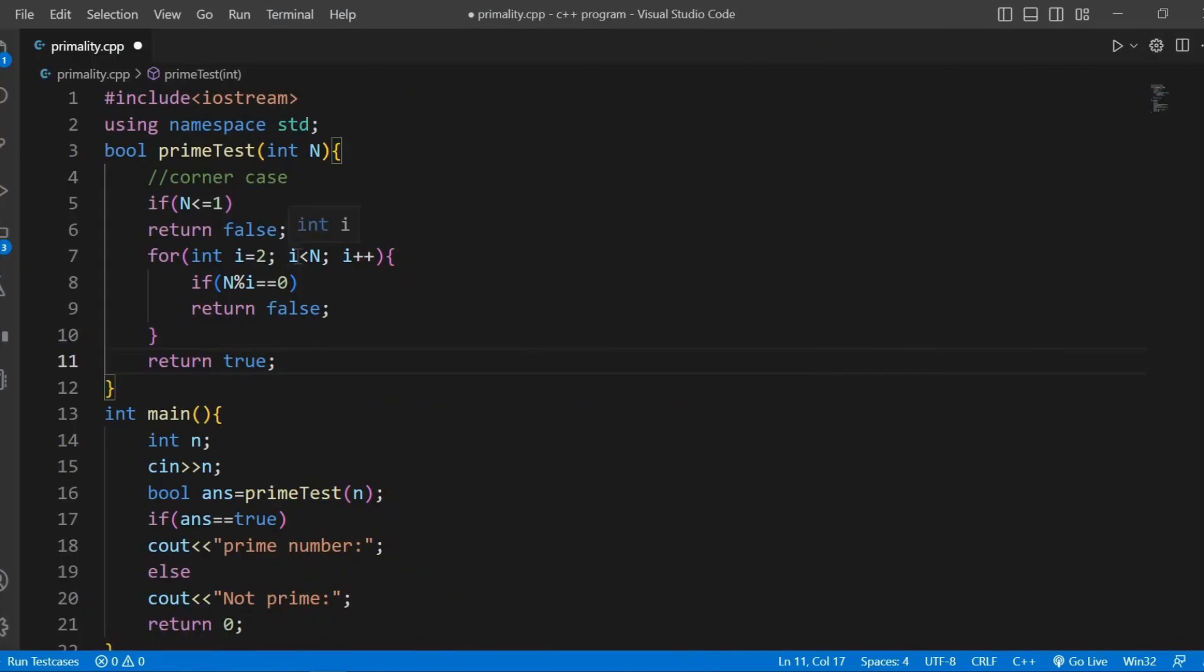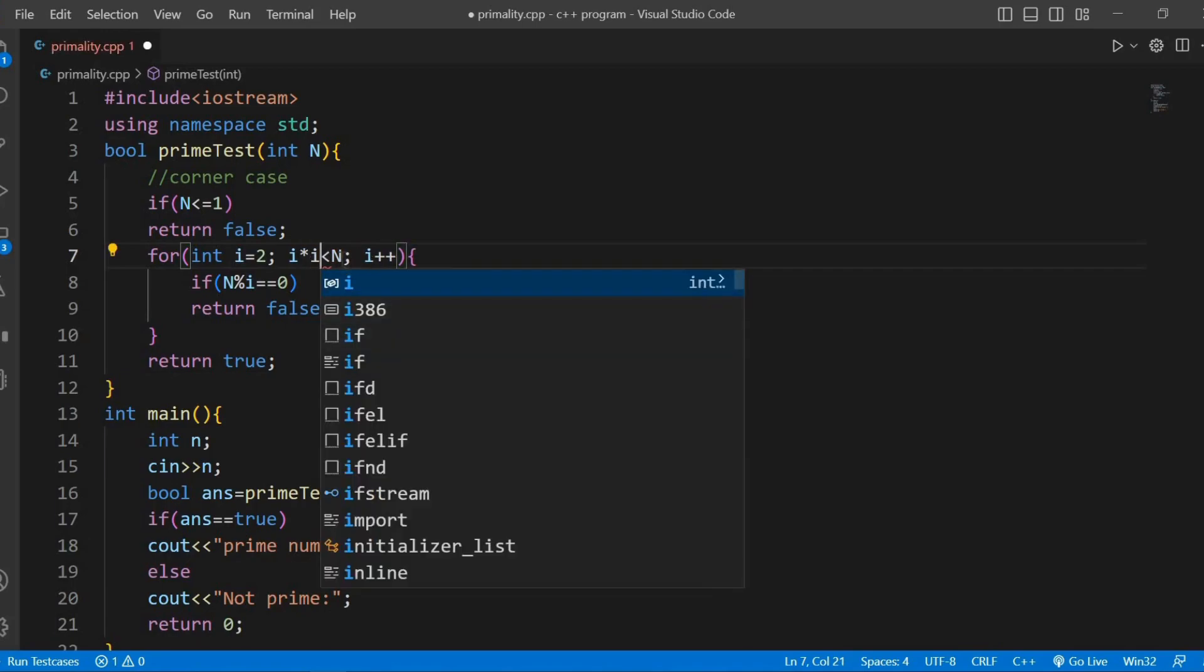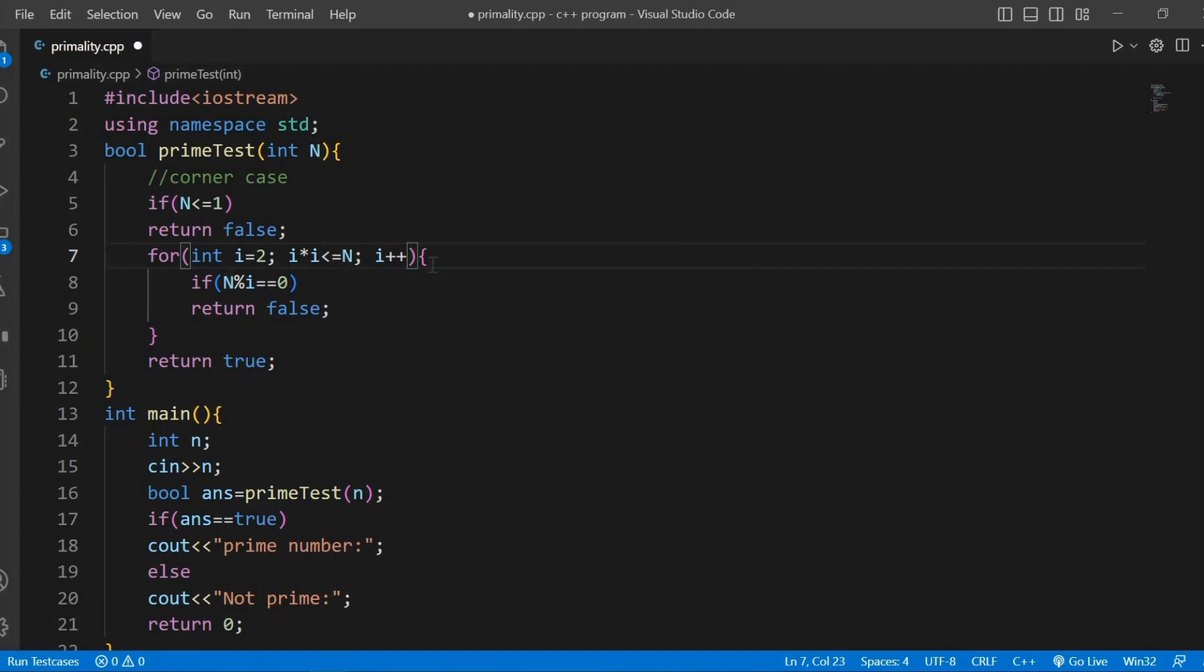Now let's write the code. Here only one change is required: instead of i less than n, we add i less than or equal to square root of n, or simply i times i less than or equal to n.